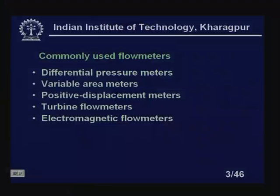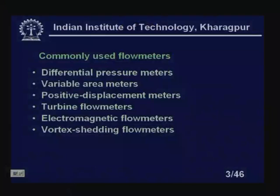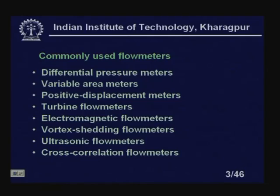We also have turbine flow meters, which give a direct electrical output. We have electromagnetic flow meters, which have advantages because there are no obstructions. We have vortex shedding flow meters, ultrasonic flow meters — which are non-invasive and do not create any pressure loss, unlike differential pressure meters which cause a permanent pressure loss in the pipe. We also have cross-correlation flow meters and laser Doppler flow meters.